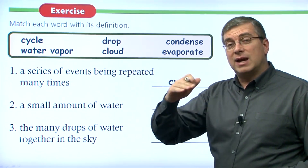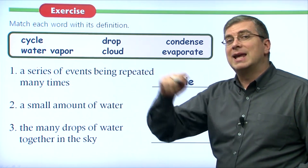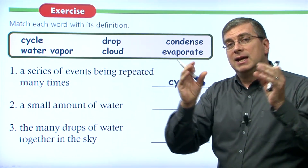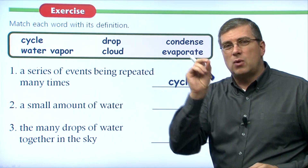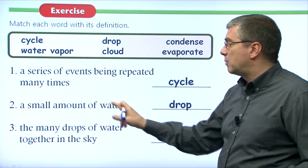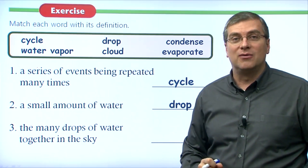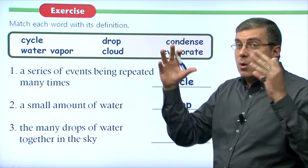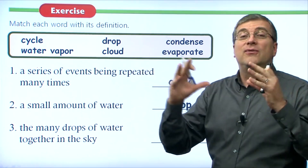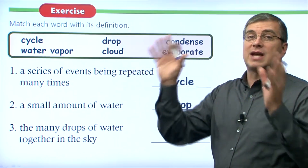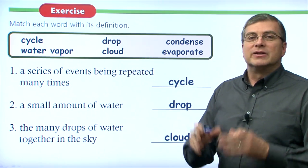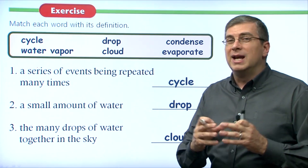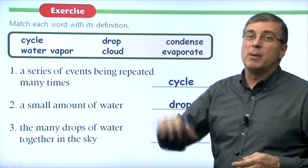A cycle is several events in a series — first, second, third — that happen again and again. Number two: a small amount of water — as the water vapor goes up into the sky, gets cooler, and comes back together making small amounts of water, we call those drops. Number three: many drops of water together in the sky — as water rises and condenses, they form clouds. Some clouds are very white, some are dark or gray. If it's a white cloud, there's not a lot of water; if it's gray, there's more water; if it's black, there's a lot of water and it's probably about to rain.